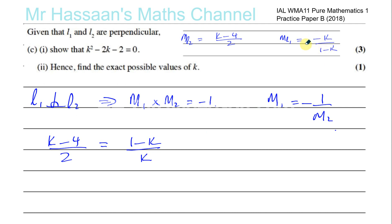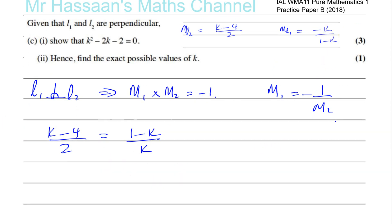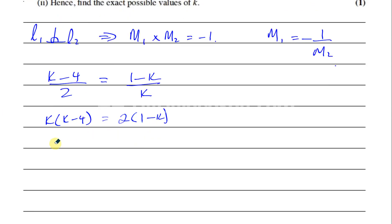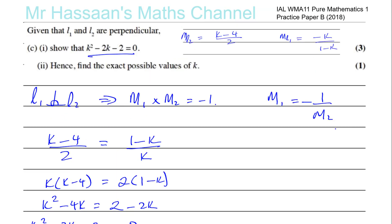So now that's become, instead of being, it was a negative K, now it's positive. And I've written it upside down. So now I can try to make it look like this by cross multiplication. So I have K times (K minus 4) equals 2 times (1 minus K). So let's just simplify this. That's K squared minus 4K equals 2 minus 2K. Let's bring everything on one side. K squared, that's going to be minus 4 plus 2, which is minus 2K minus 2 equals 0 as required. That's C part 1.